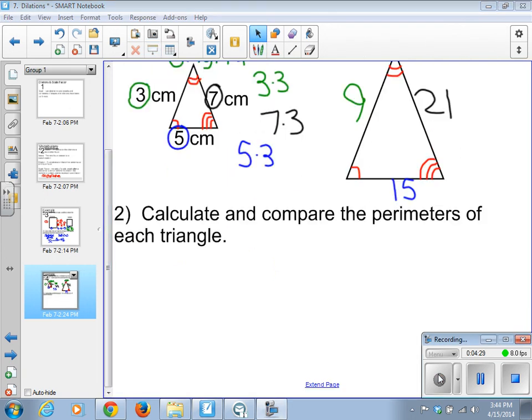And like our previous slide, we're going to calculate and compare the perimeters of each triangle. So we add up all the sides of the original. 3 plus 7 is 10, plus 5 makes 15. We add up the side lengths of the image. 9 plus 21 is 30, plus 15 is 45.